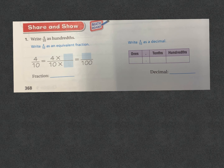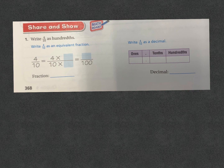Let's practice a few. If this is making sense, do the pause and play thing and see how you do. We're going to write 4 tenths as hundredths — as an equivalent fraction. 4 tenths equals, if we want the denominator to be hundredths, we would multiply 10 by 10. 10 times 10 equals 100. And whatever we do to the denominator, we must do to the numerator as well to keep it equivalent. 4 times 10 is 40. So now I have 40 hundredths.